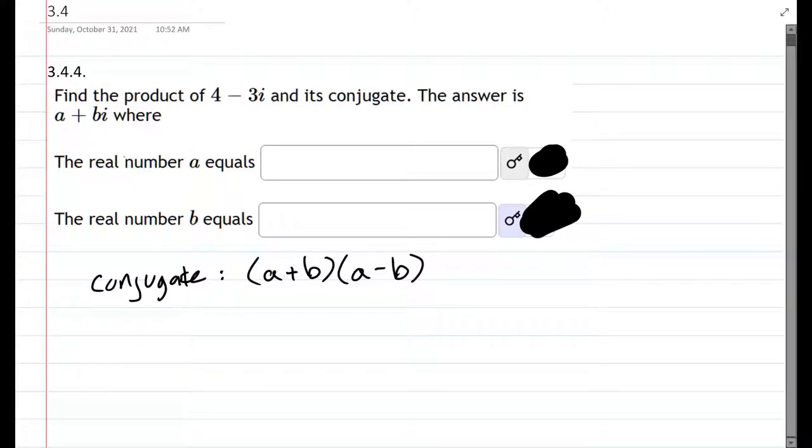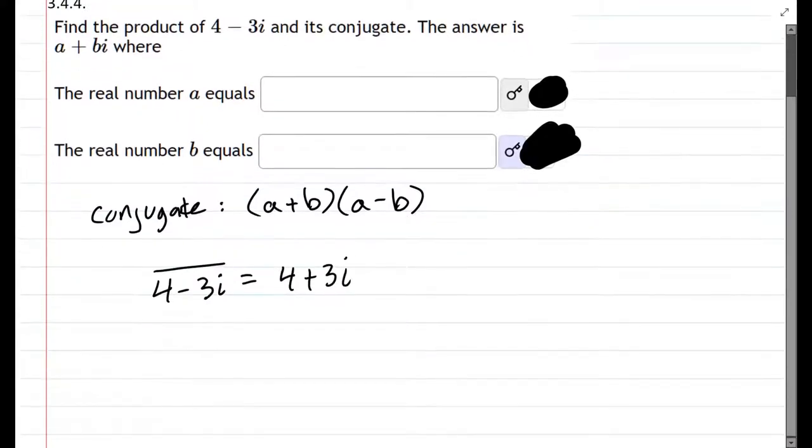So we have 4 minus 3i. The way you write conjugates, you put a bar over top of it. Now it's a little bit annoying looking because it kind of looks like you're starting to write a fraction, and that's just the way that the notation works. So its conjugate is 4 plus 3i. That's how you get the conjugate.